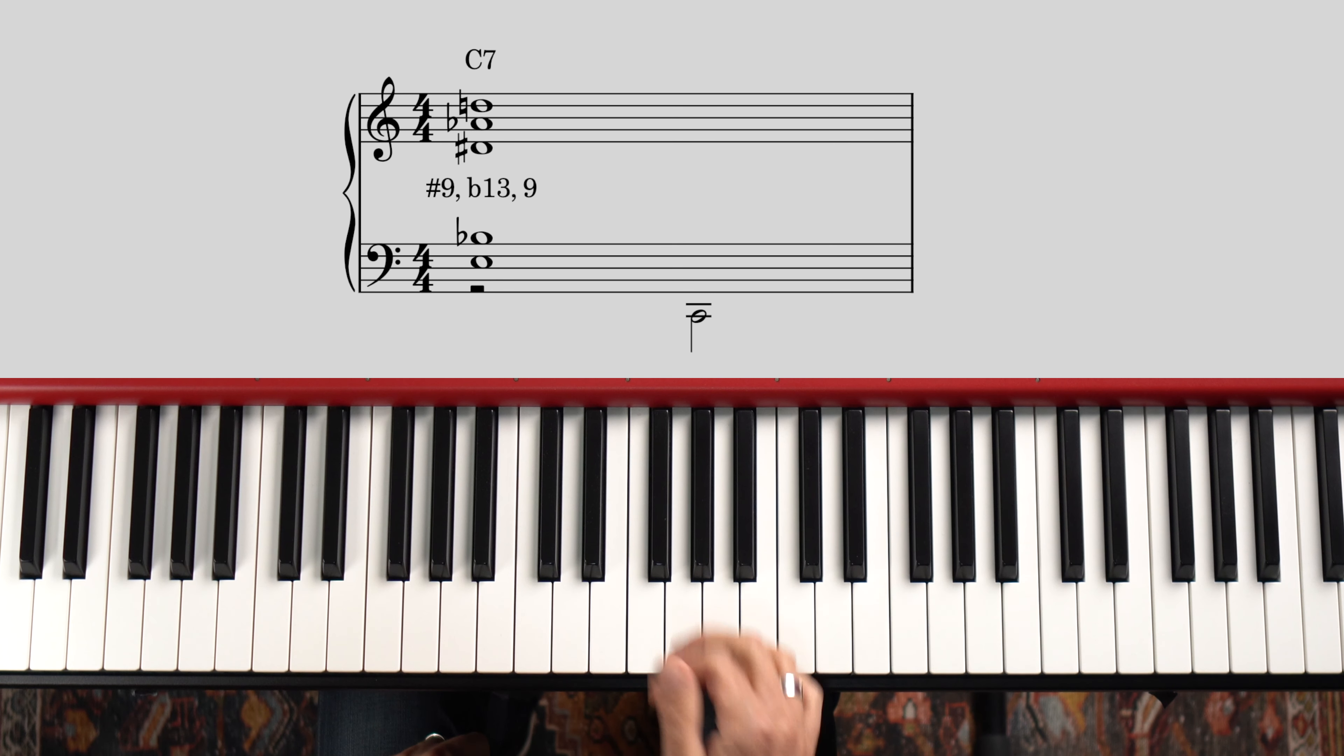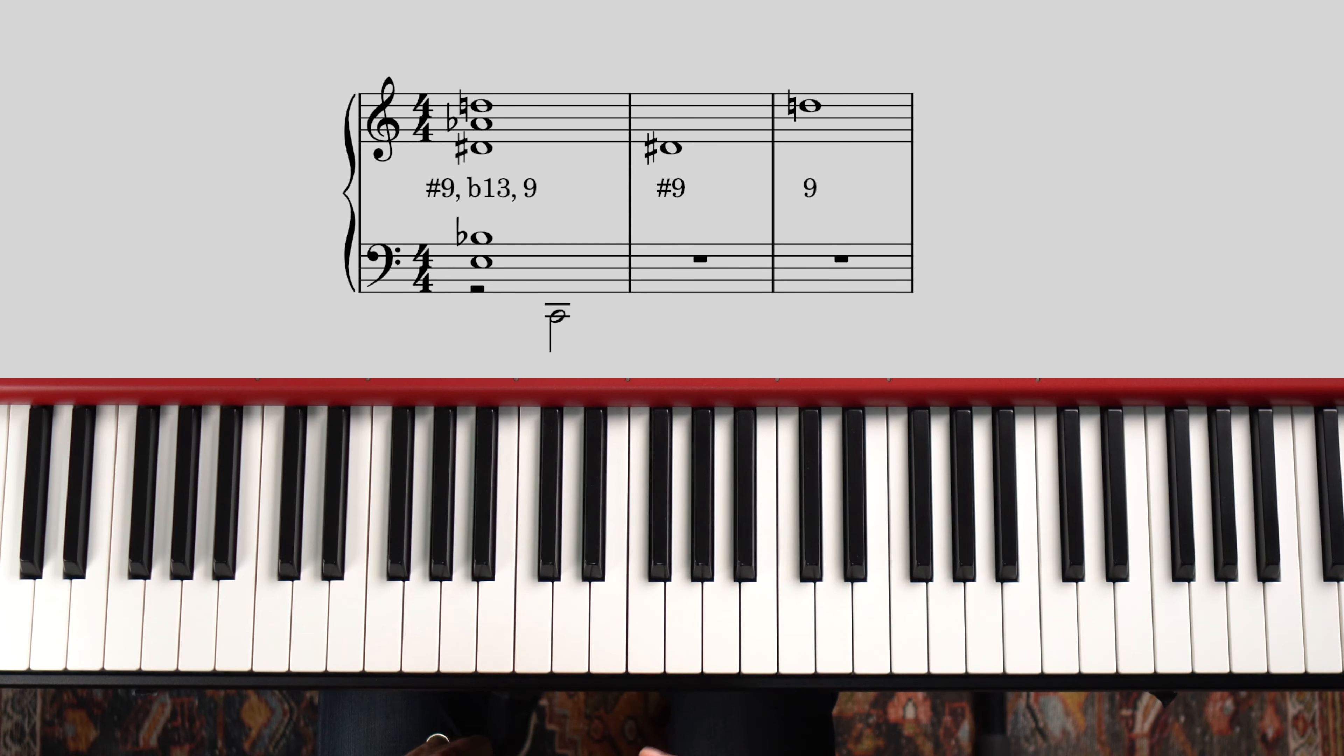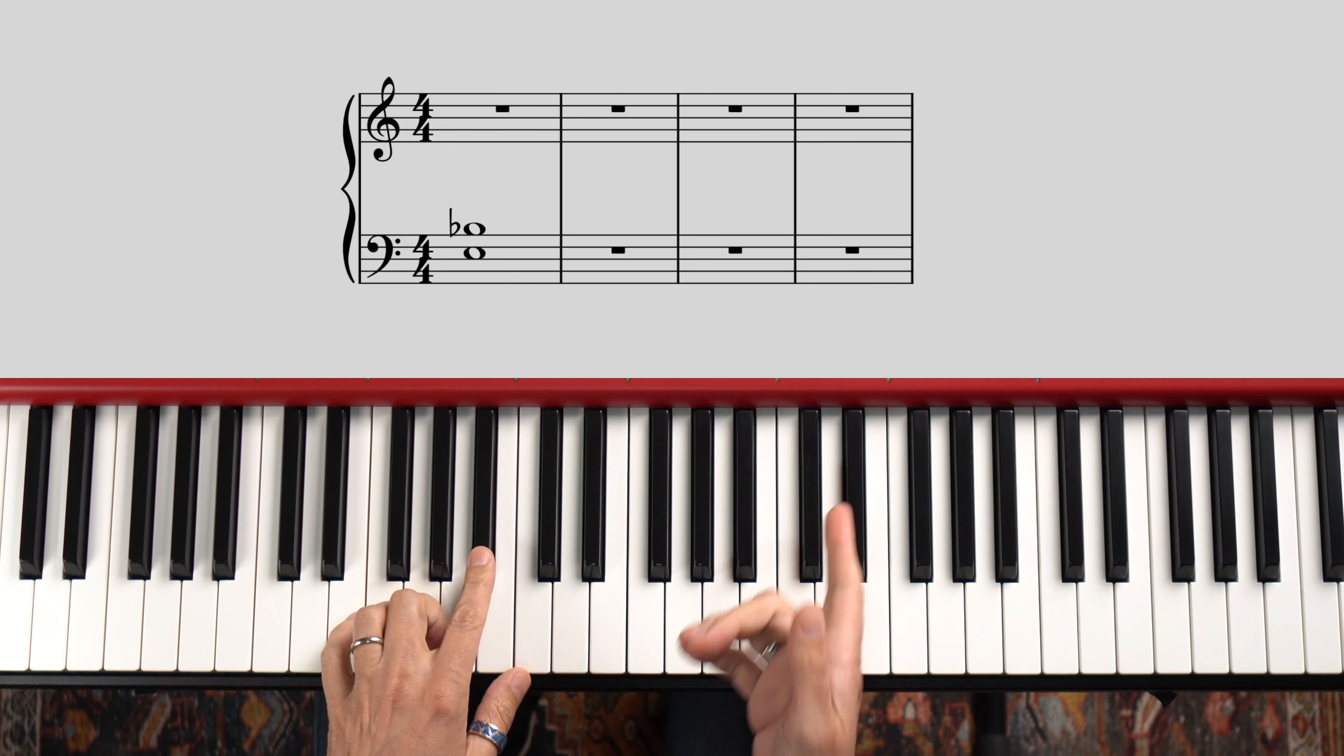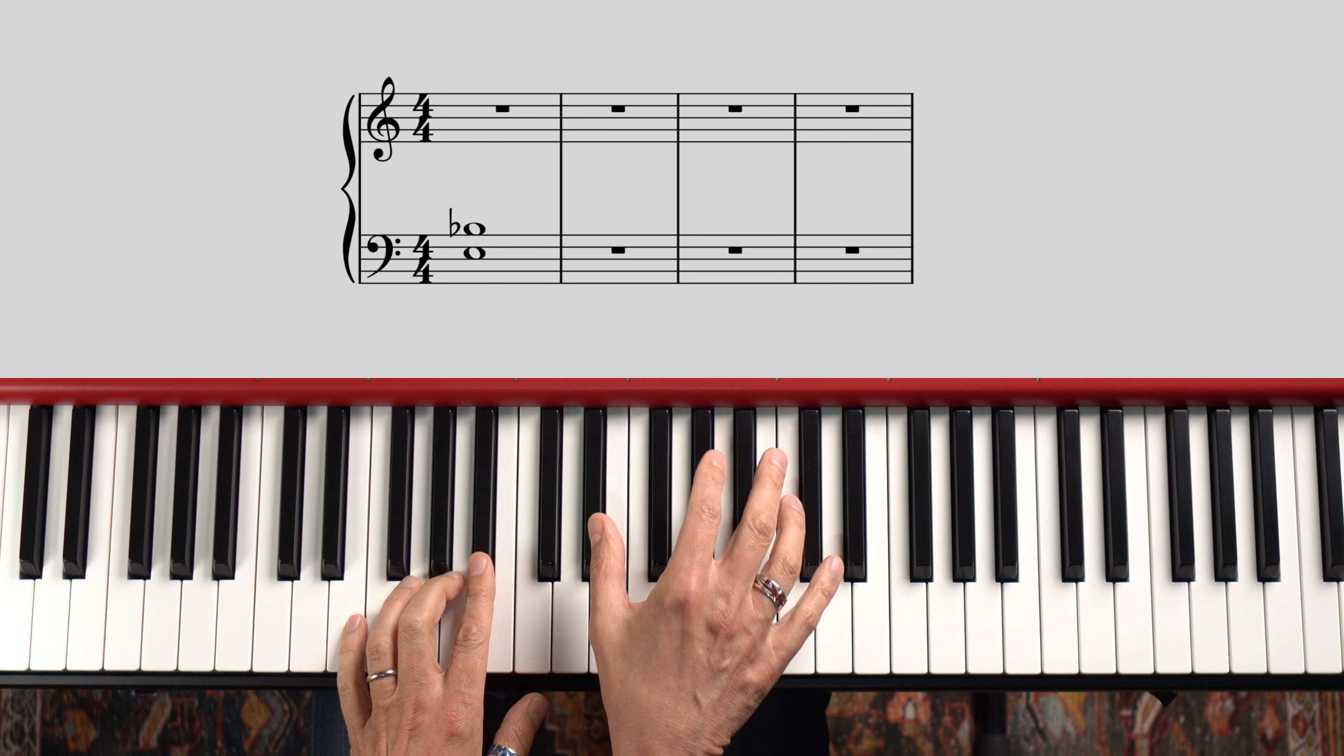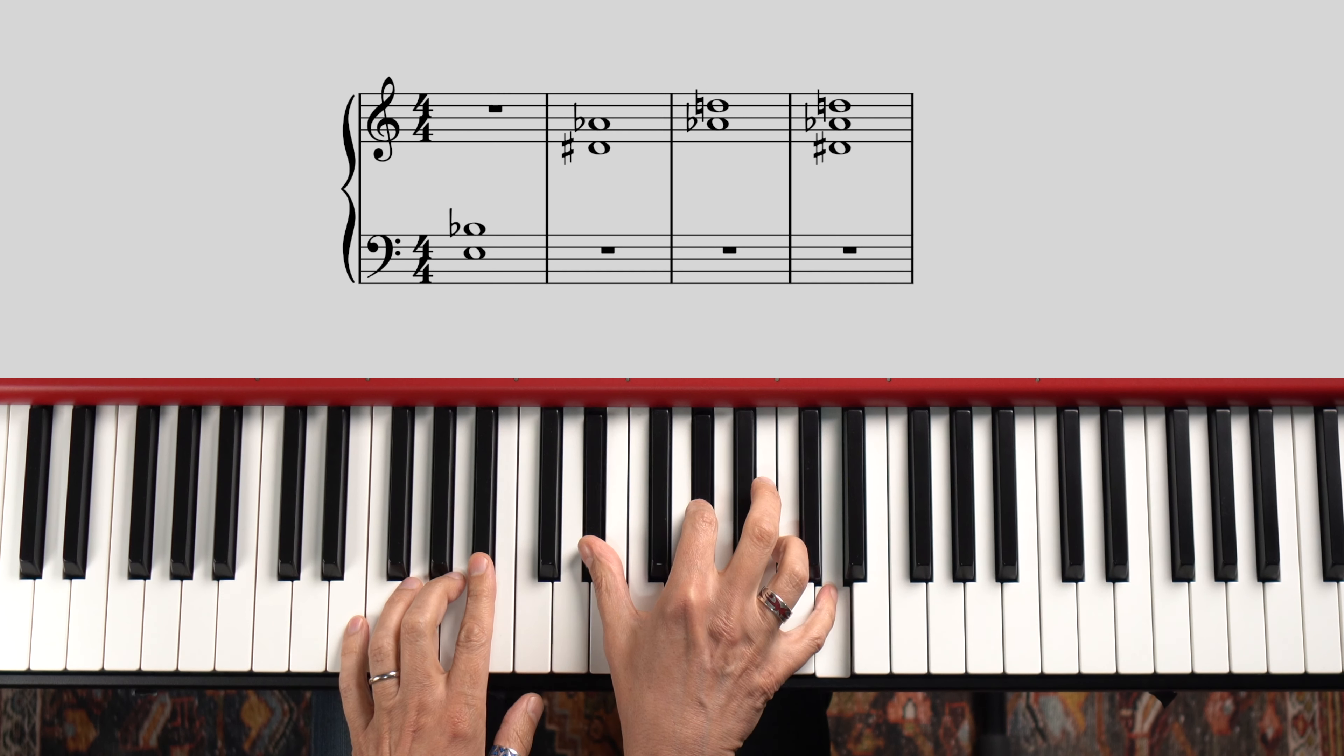My voicing now contains both a sharp 9 and a natural 9. I can think of it as having two parts, the guide tones in my left hand, which form a tritone, and this quartal shape in my right hand, consisting of a perfect fourth and an augmented fourth. Dissonant? Very much so. Awesome nonetheless. I think so.